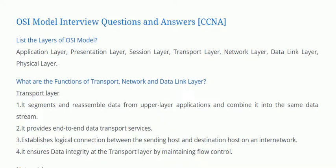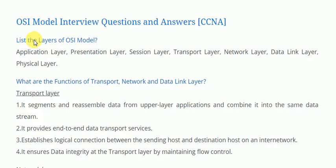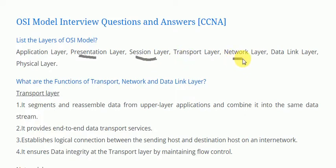The second question is: list the layers of the OSI model. The layers of the OSI model are application layer, presentation layer, session layer, transport layer, network layer, data link layer, and the last one is the physical layer.